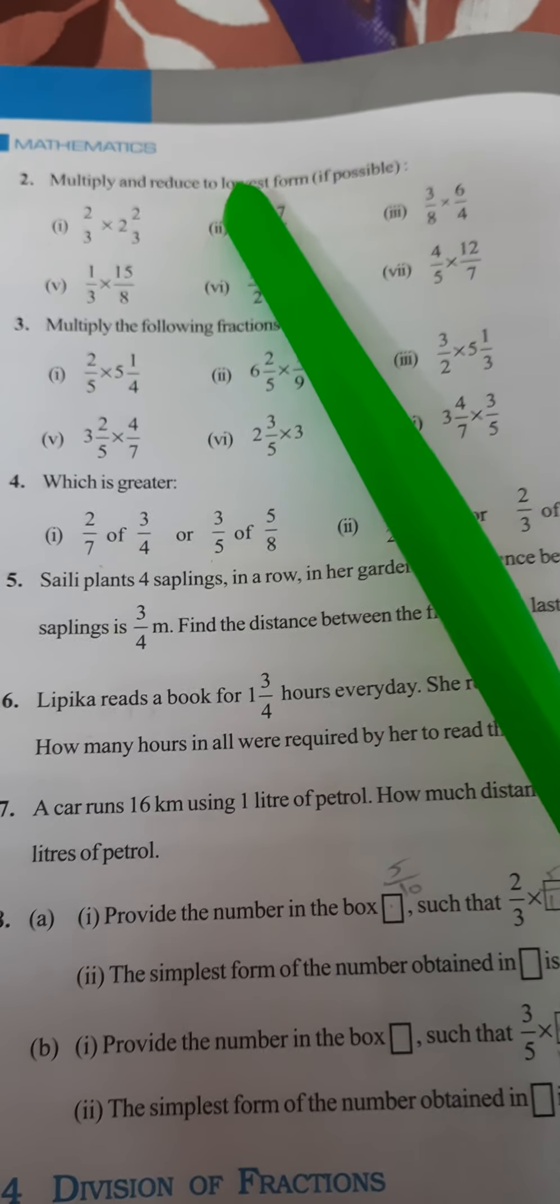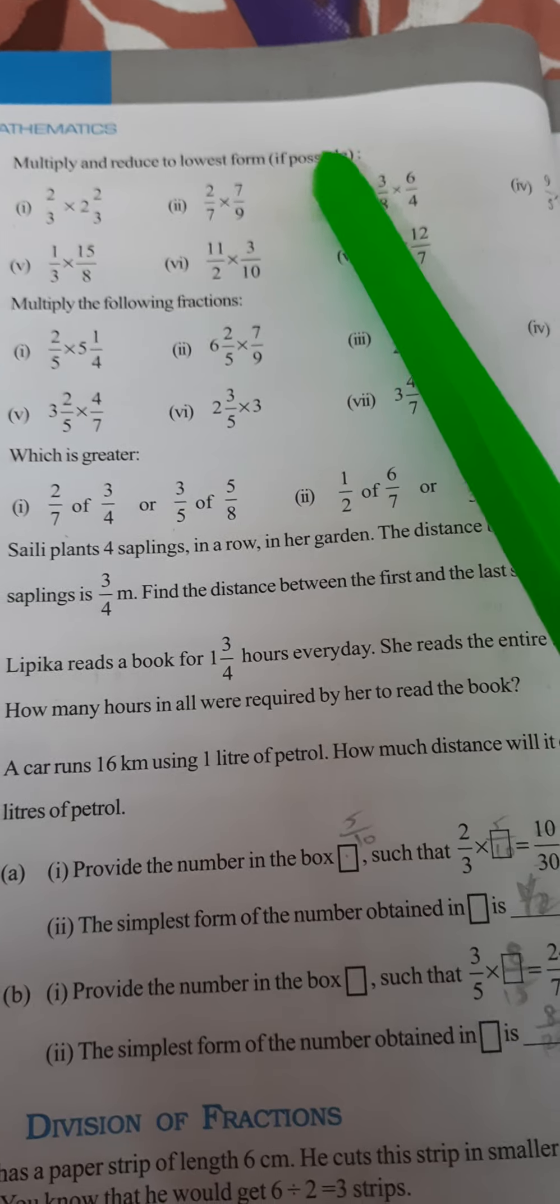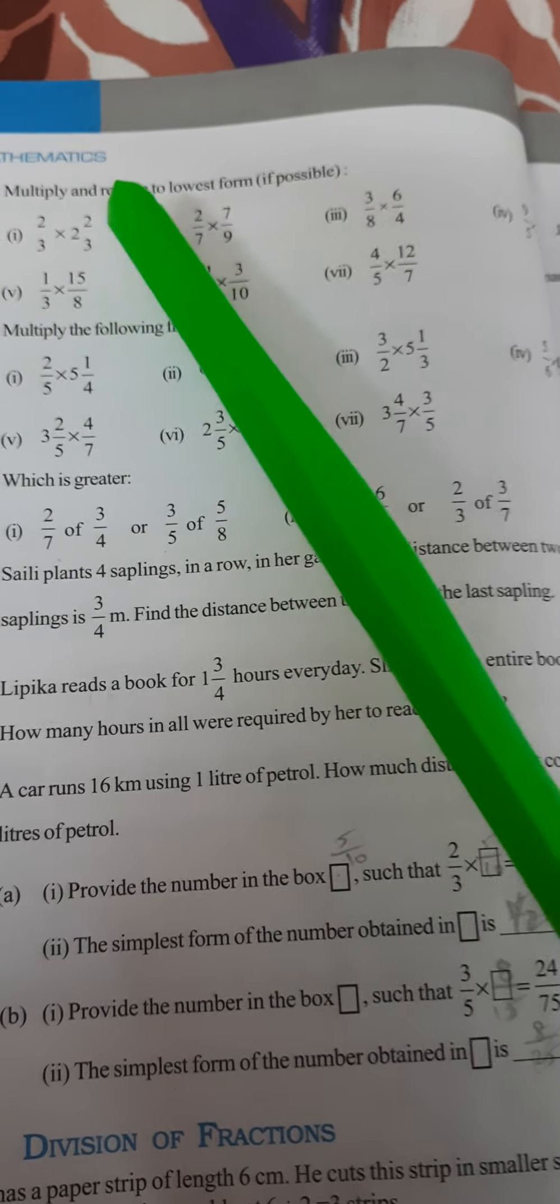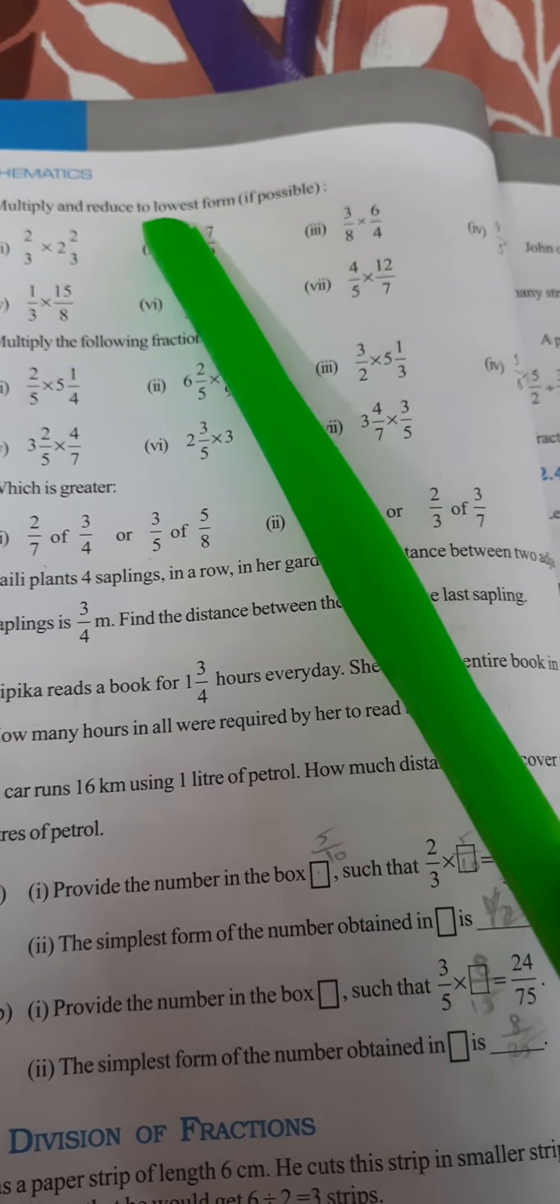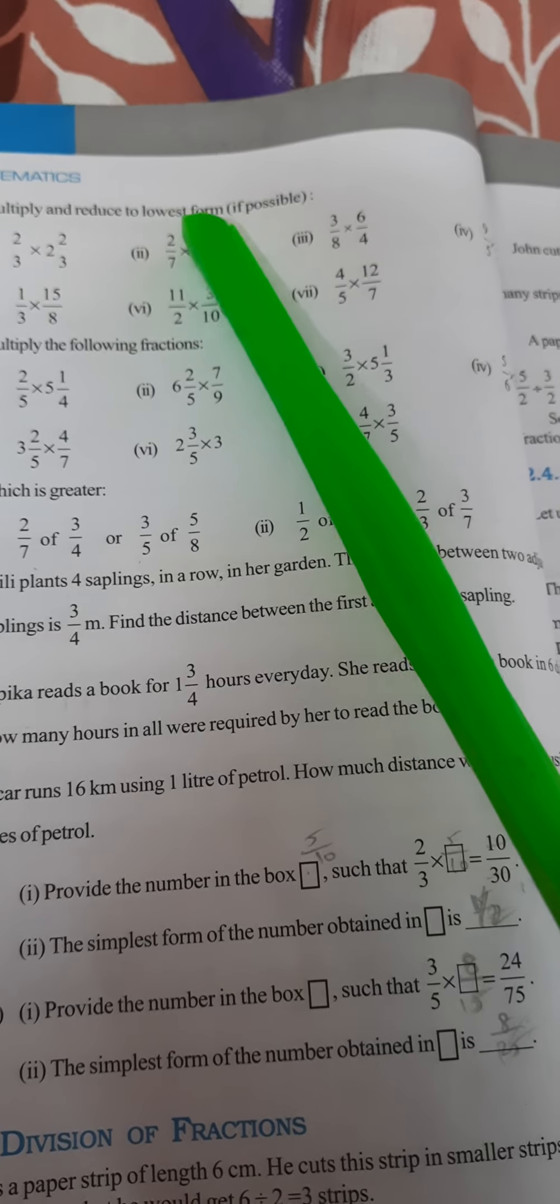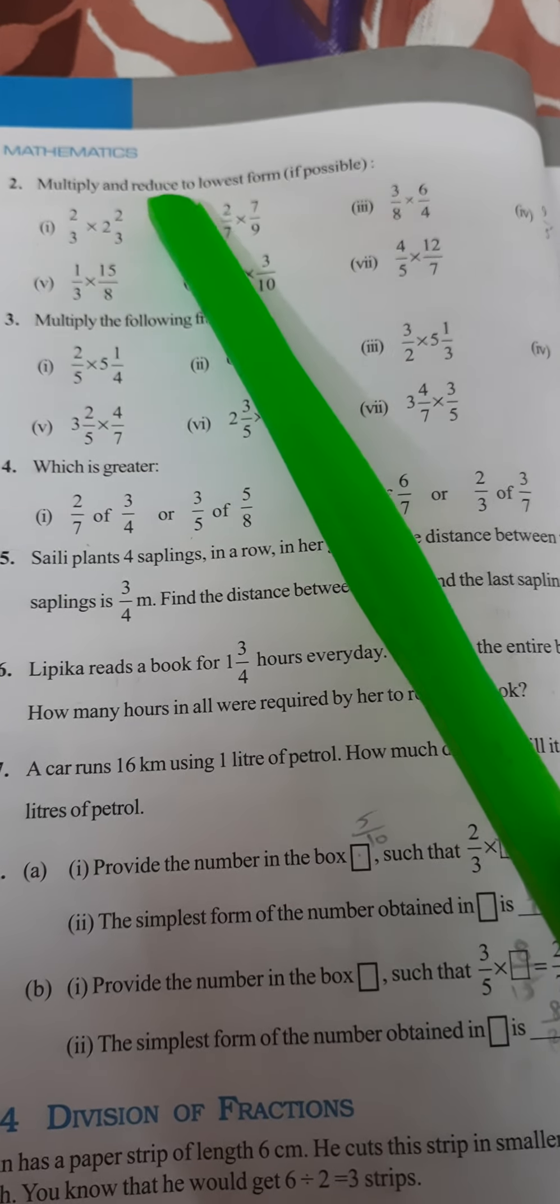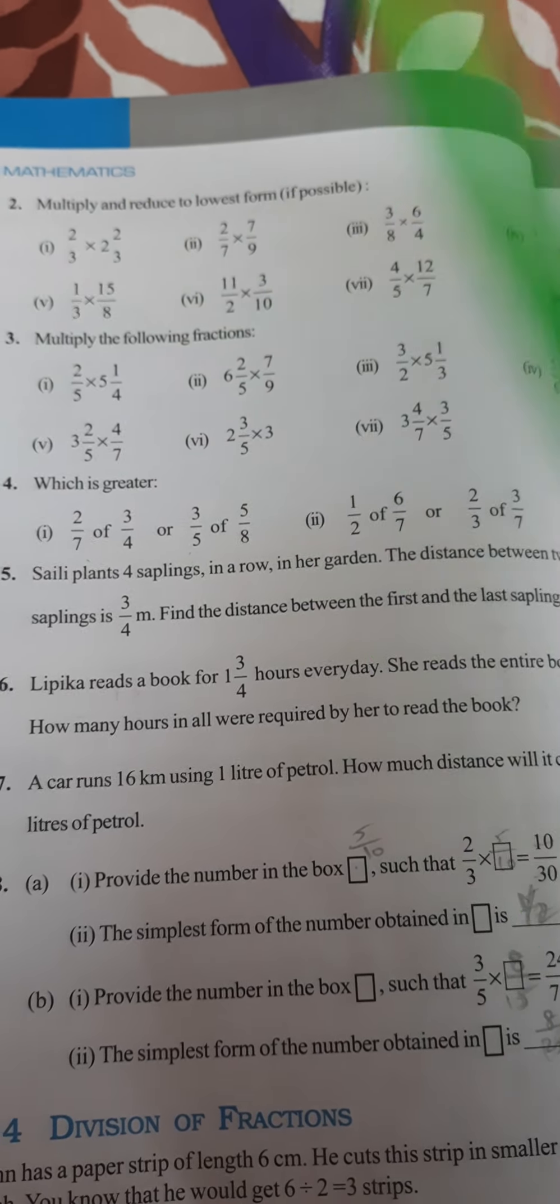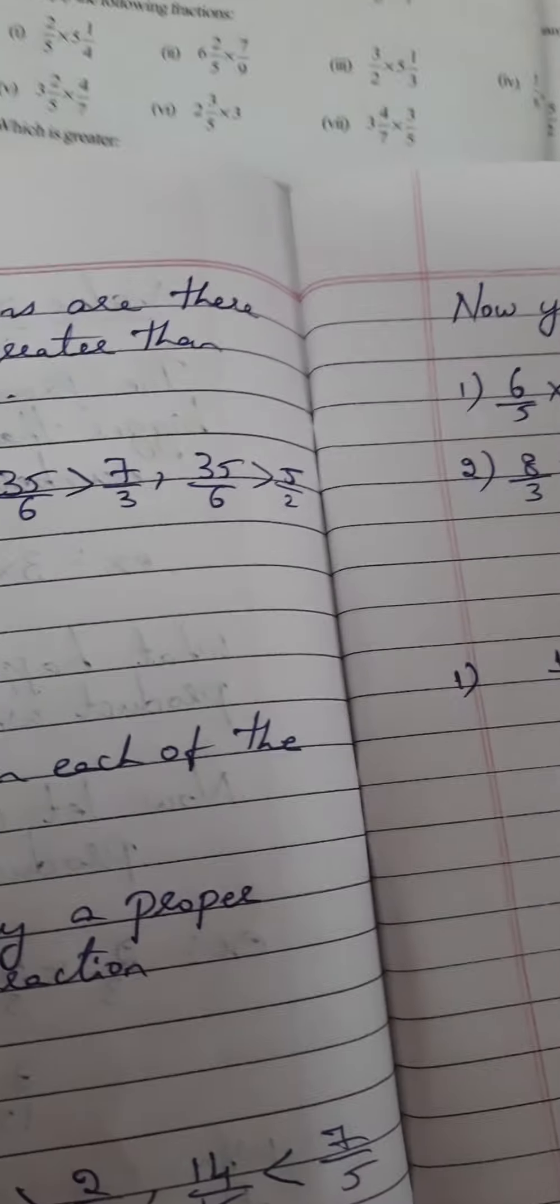Multiply and reduce to lowest form if possible. Actually, I have told you everything in exercise 2.2—that is multiplication of a fraction with a whole number. But here, they have given multiplication of a fraction by a fraction. So the second one: multiply and reduce to lowest form, 2/3 × 2 2/3. Let us solve this one.